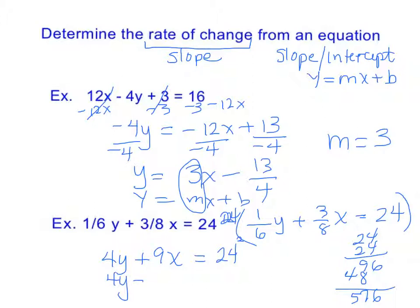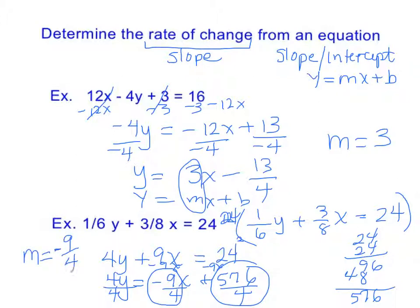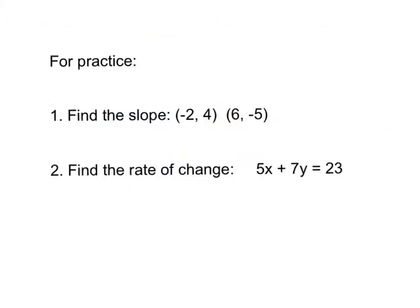So I'm going to do the same thing. So I have 4y equals negative 9x. I subtracted the 9x to the other side plus 576 and divide through by 4. And I don't need this number, so I don't need to figure it out. What I need is this number, which is my slope. And so my slope is negative 9 fourths.